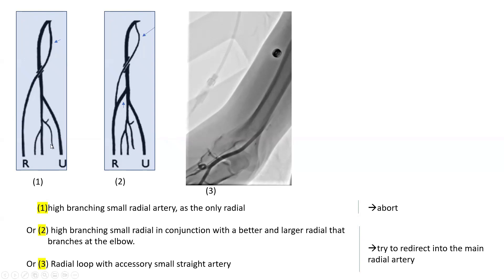The second option — all three options are high branching radial — but the second option is that it's a high branching small radial in conjunction with a better and larger radial that branches at the elbow. In this case, you need to redirect your gear toward that bigger, standard branching radial.